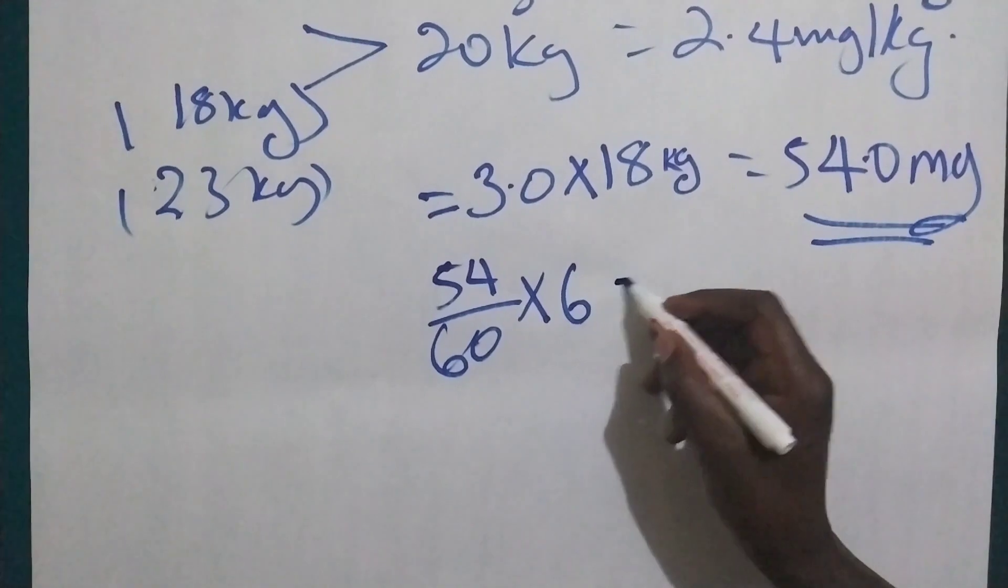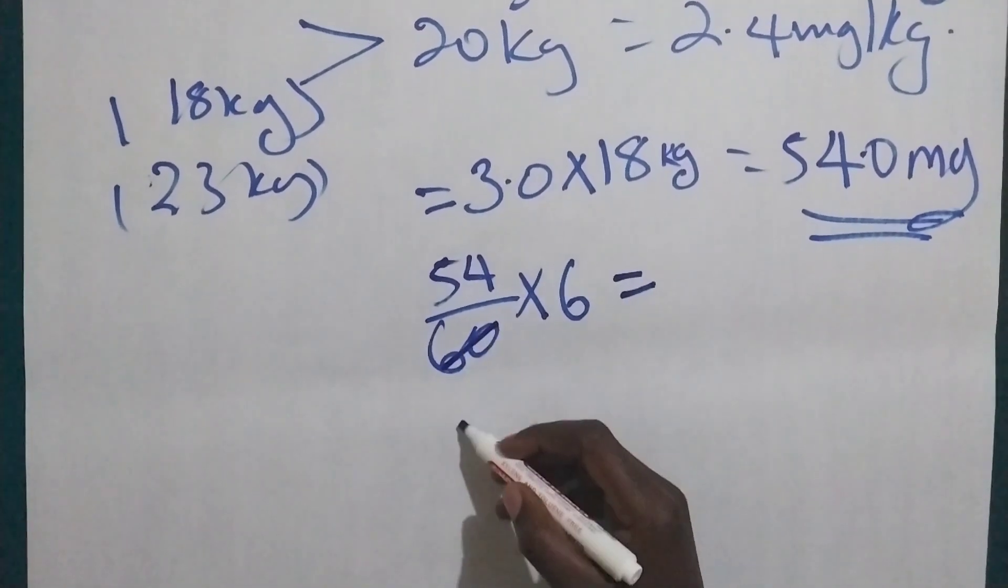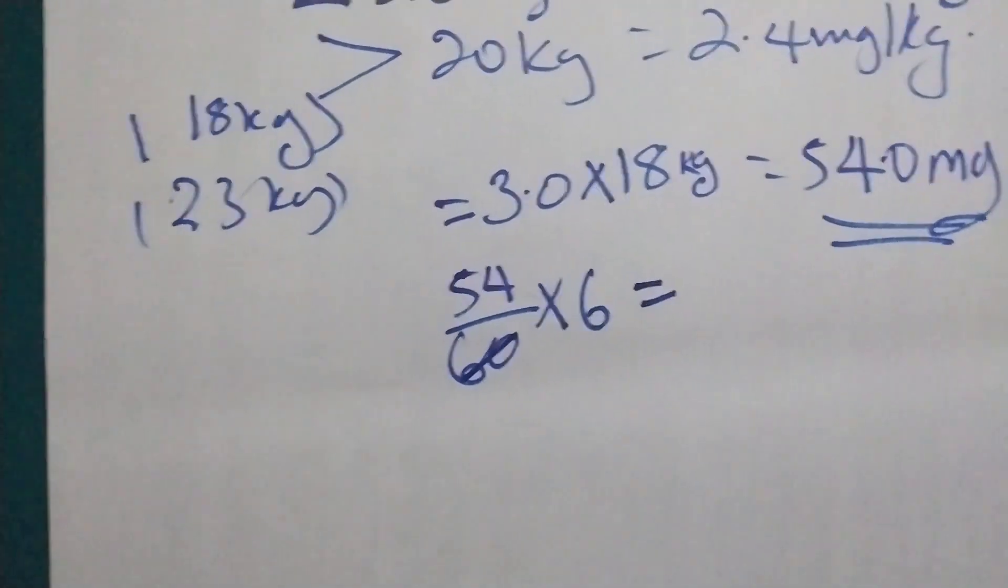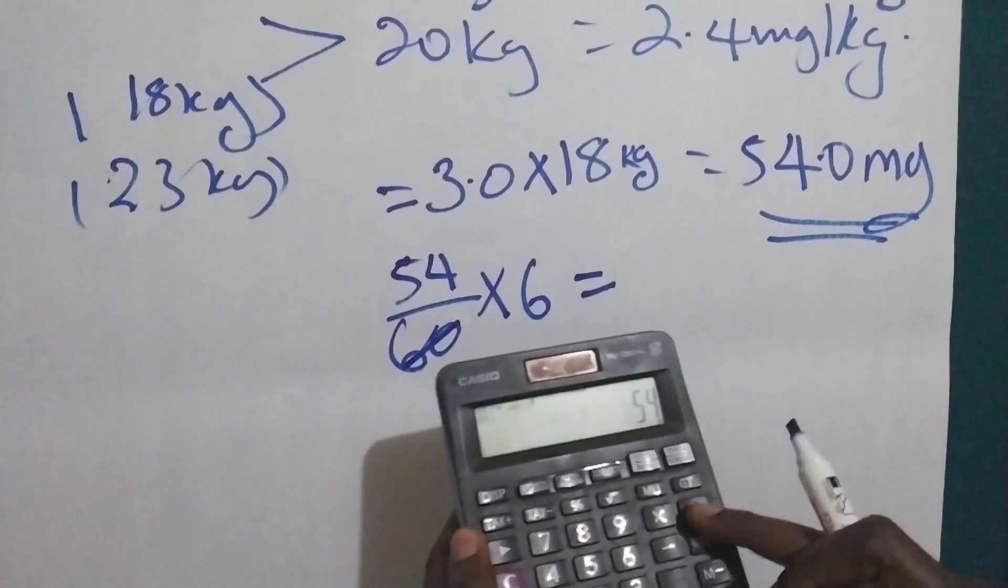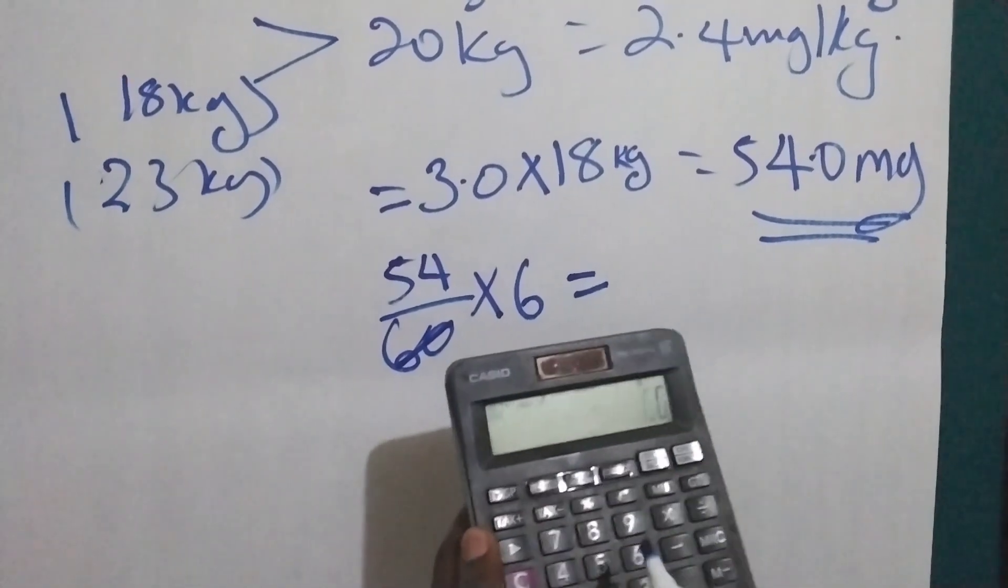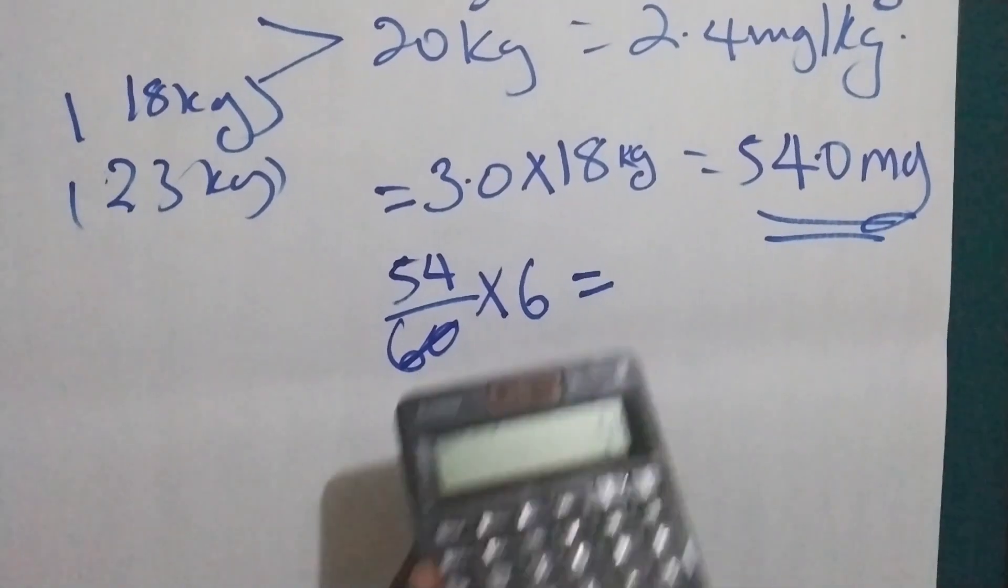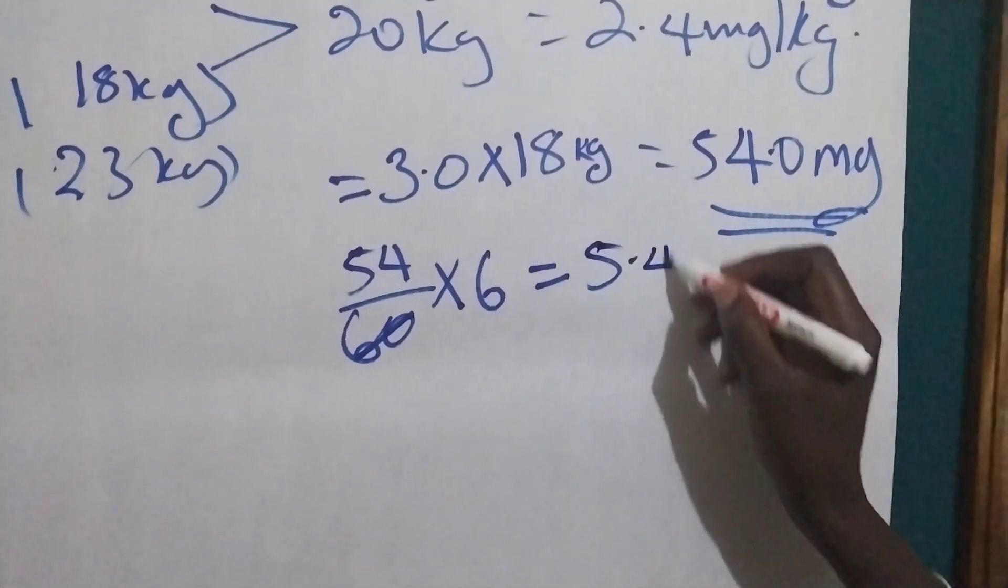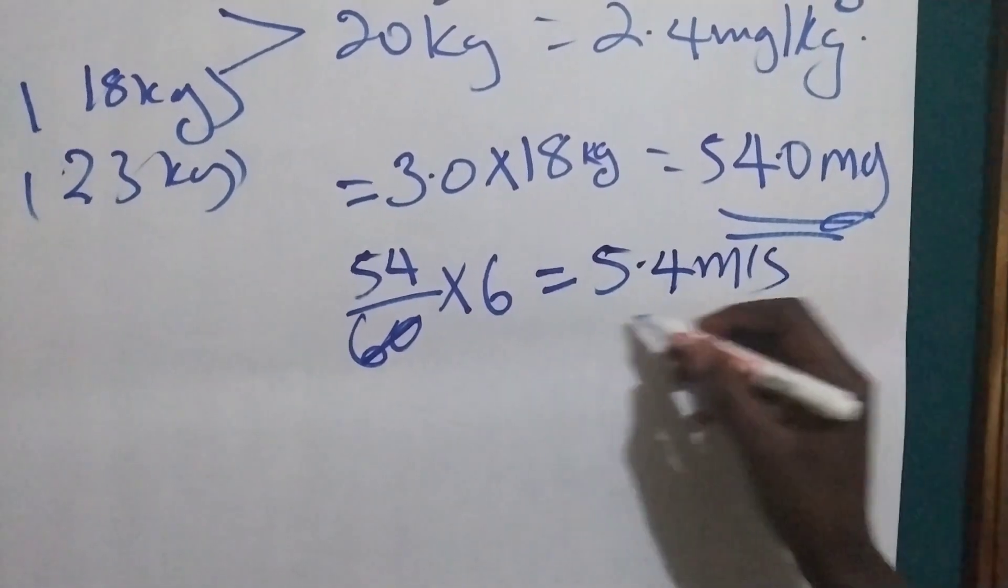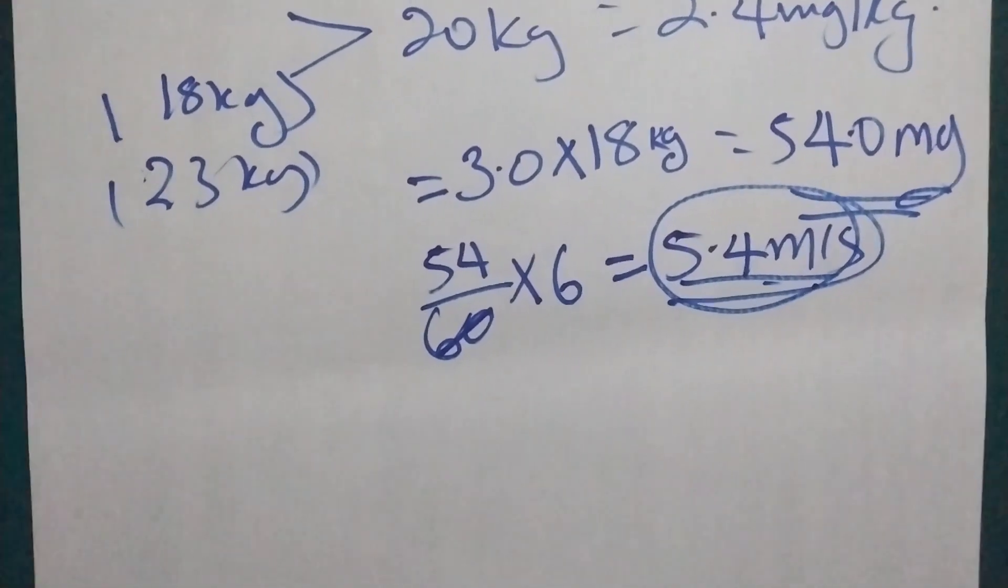So what will we get here? So if we calculate this one, 54 divided by 60 times 6, we are going to get 5.4 milliliters. So this is what we are going to aspirate and give to this baby.